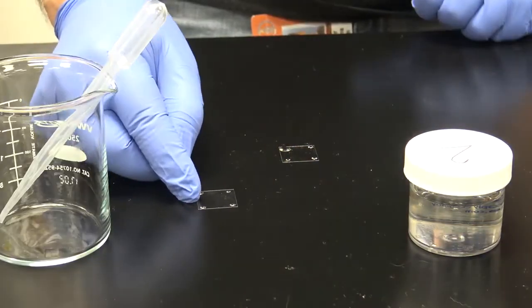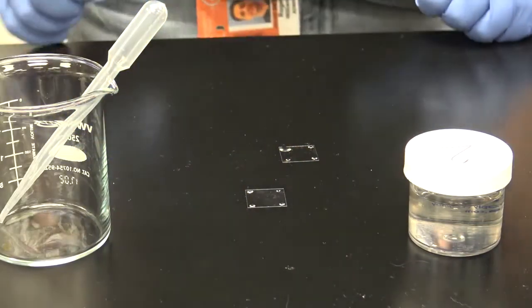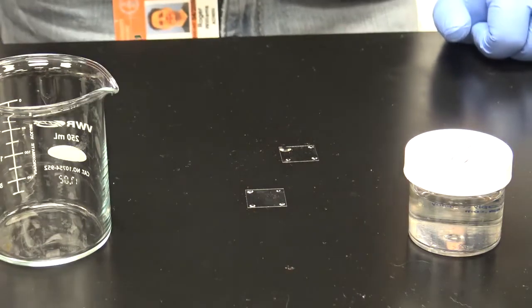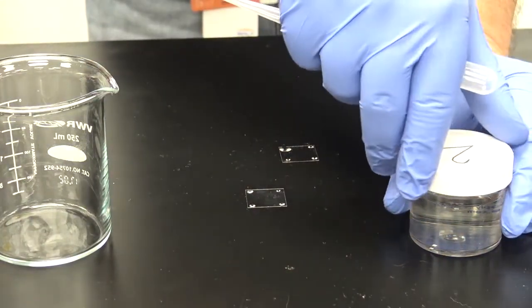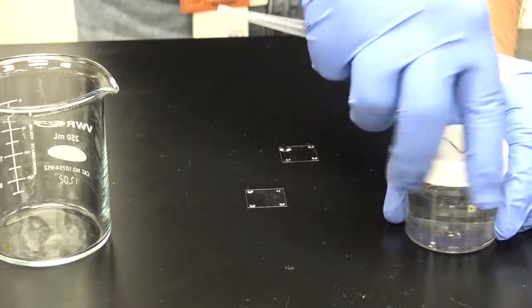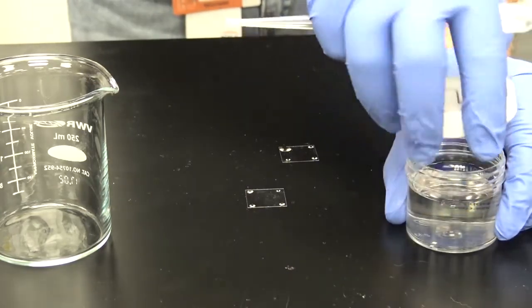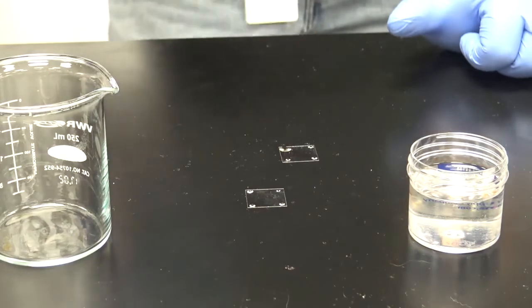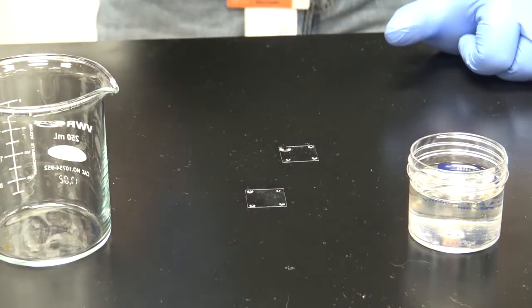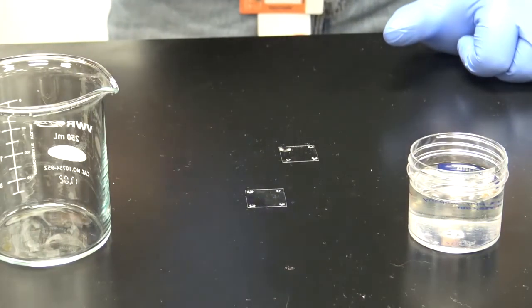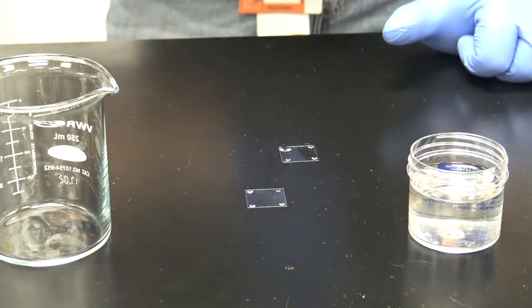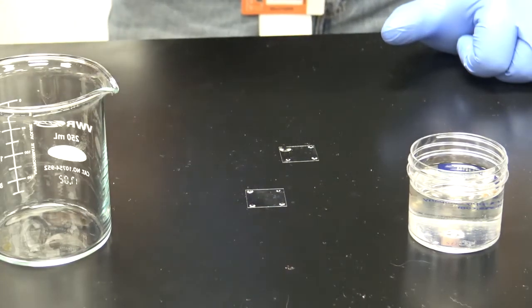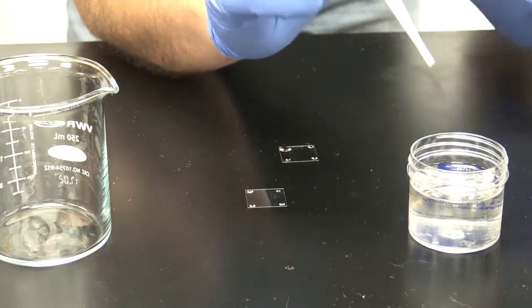Now that we have our four drops on the cover slip, what we're going to do is go into our sample and, using a dropper, pull from that sample and place it in the center of our cover slip. Now the droplet has to be small enough to where it doesn't make contact with the backside of the concavity. So let's go in.